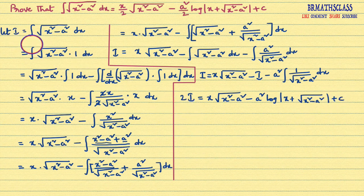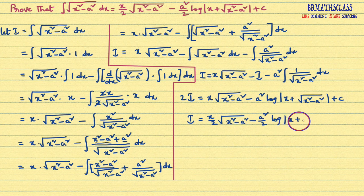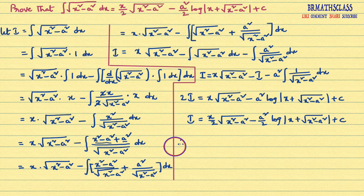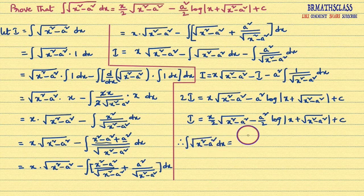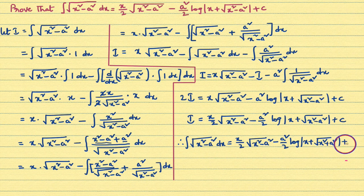Now I want to calculate I, but here 2I is there. Dividing the complete equation by 2: I equals x by 2 into root over x square minus a square minus a square by 2 into log mod x plus root over x square minus a square plus c. Therefore, we have proved that integral of root over x square minus a square dx equals x by 2 into root over x square minus a square minus a square by 2 into log mod x plus root over x square minus a square plus c.